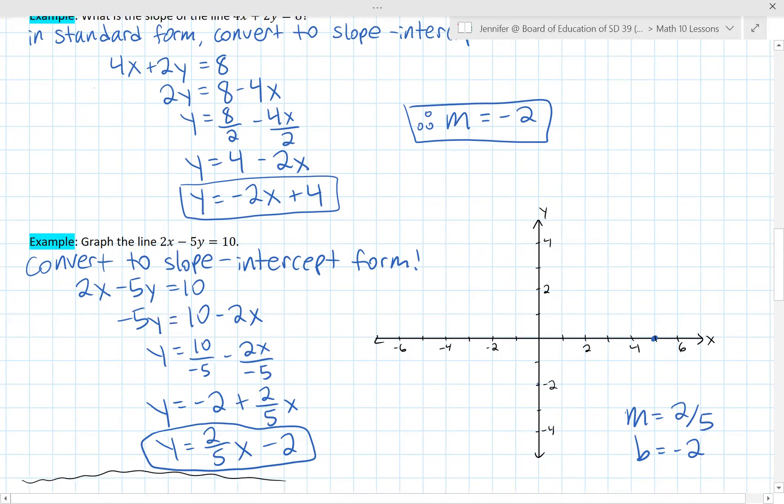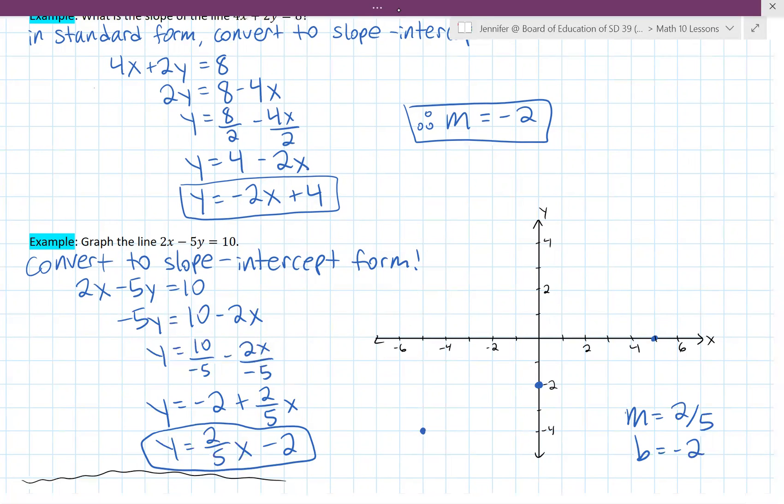So now it's pretty easy to graph. First step is we plot our y-intercept at negative 2. Then we use our slope to find two more points. So we would go up 2 over 5. Already have a point there. We can't go any more this direction but from our original point we can go this direction now. So we would instead go down 2 and over 5 right here. Now that we have three, we can connect them with a straight line.